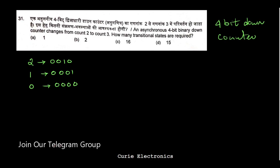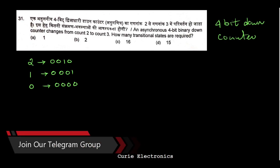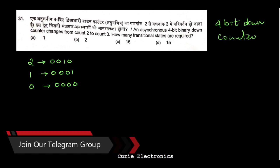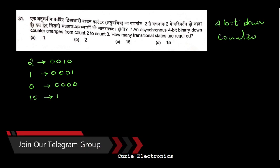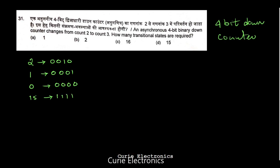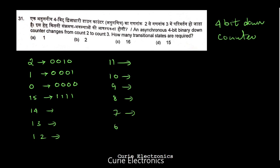If there is no reset or preset, what happens normally is that a down counter starts from a higher value. Without a reset, the next pulse takes it to 15, because it's a four-bit counter. Then we get 1111, then 14, 13, 12, 11, 10, 9, 8, 7, 6, 5, 4, 3 — it continues counting down like that.